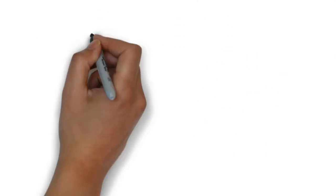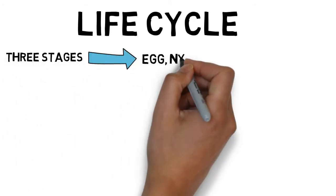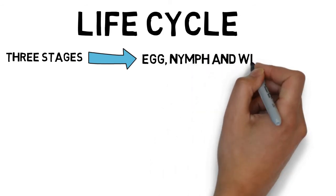Life cycle. Life cycle of desert locust consists of three stages: the eggs, the nymph known as hopper, and the winged adult.